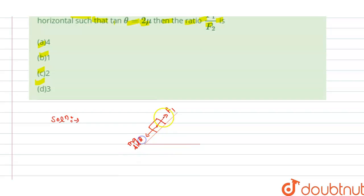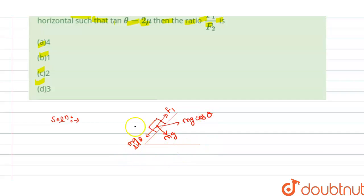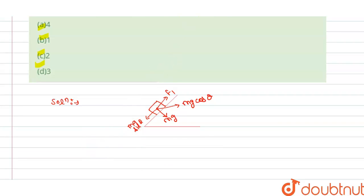Here we have mg sin θ in this direction, mg (mass times gravity) acting downward, and mg cos θ in the perpendicular direction. This is the force diagram for f1.